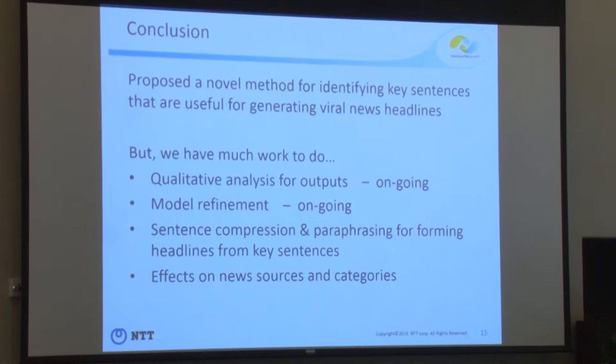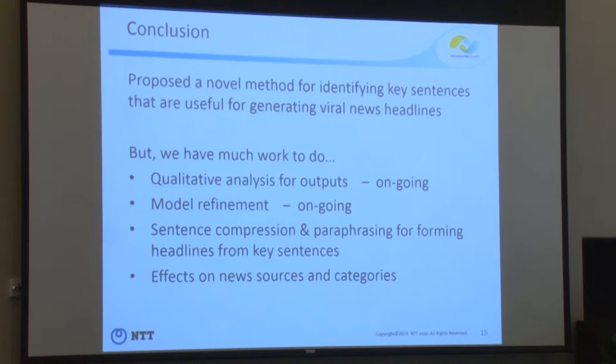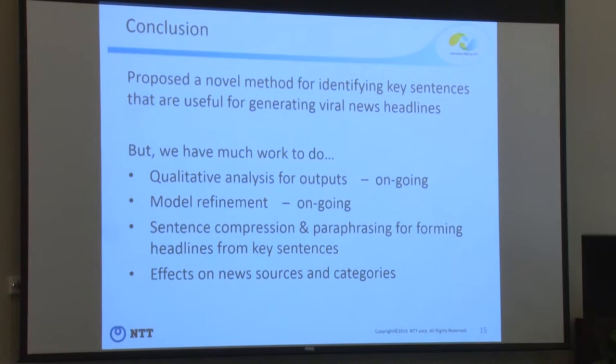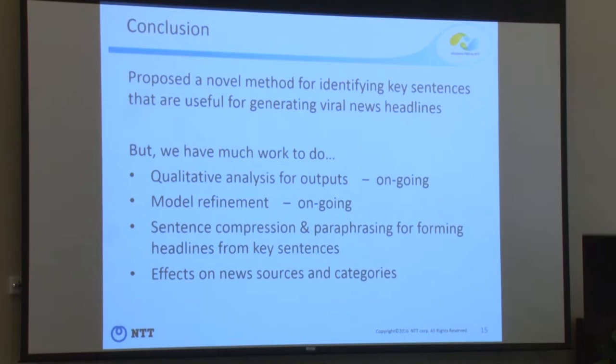The experimental result shows the ROC curve — the blue line corresponds to our proposed method and the green line is a naive baseline that selects key sentences randomly. Our method greatly outperforms the naive baseline. We also compared the position of ground truth and estimated key sentences, indicating that our proposed method can extract key sentences not only from the lead paragraphs but also from the later parts of articles. Concluding: we propose a method for identifying key sentences useful for generating viral news headlines. Future work includes qualitative analysis of algorithm output, model refinement, sentence compression or paraphrasing, and investigating effects of different news sources and categories.